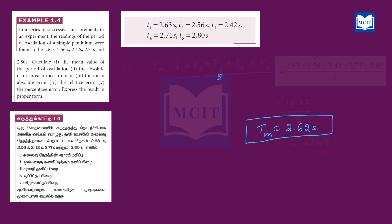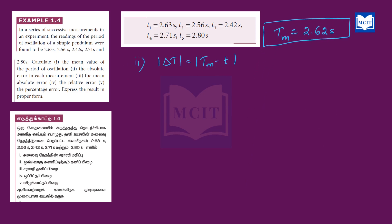The second subdivision is the absolute error in each measurement. The absolute error is mod delta t equal to mod(tm minus t). Here tm is 2.62 seconds. For each measurement, mod delta t1 equals mod(tm minus T1), which is mod(2.62 minus 2.63).